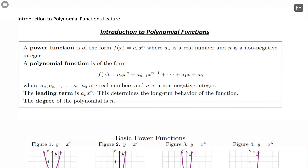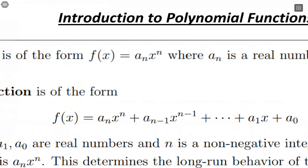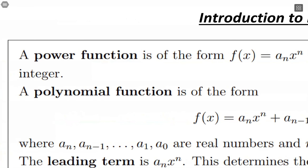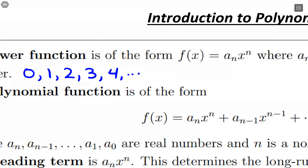A power function is where we just have a single term. This notation says we have a real number — a numerical coefficient — and then we have our variable with an exponent. That exponent needs to be a non-negative integer. So types of exponents we could have are zero, one, two, three, four — positive whole numbers as well as zero.